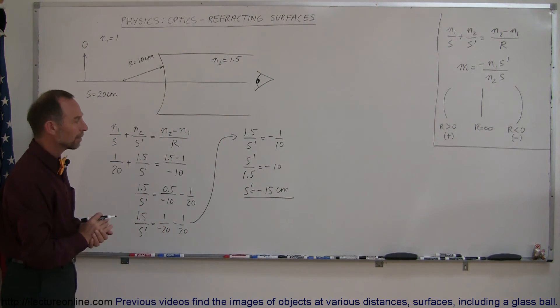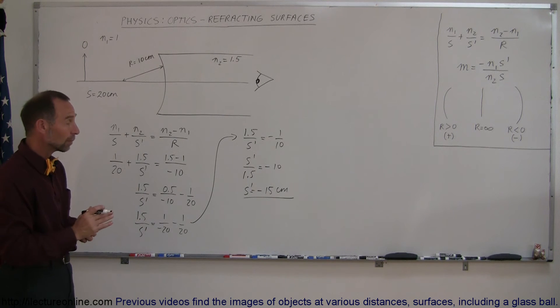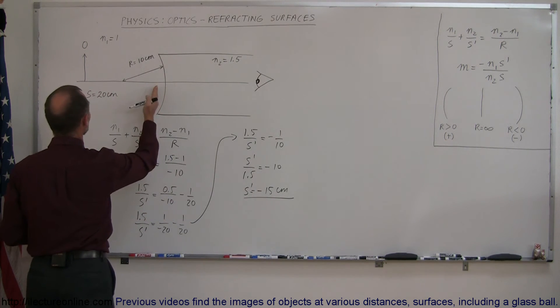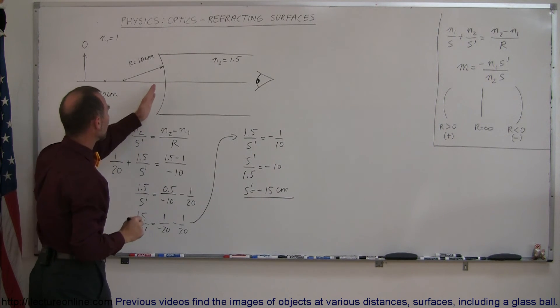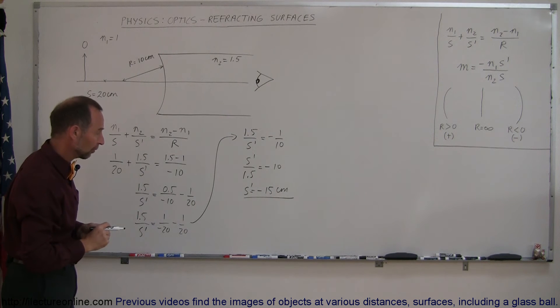What does the minus mean? Minus means that it's a virtual image and therefore on the same side as the object. So the image will be right about here at about 15 centimeters from the surface, from the refracting surface.